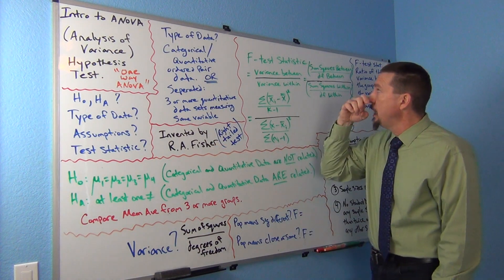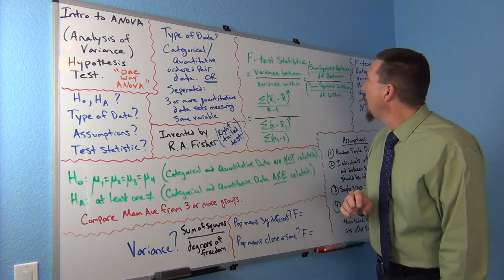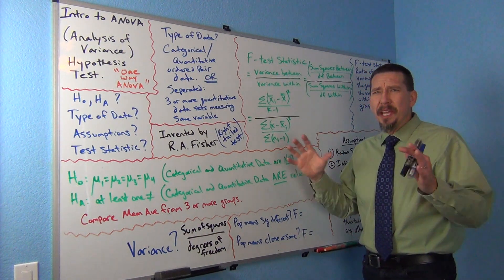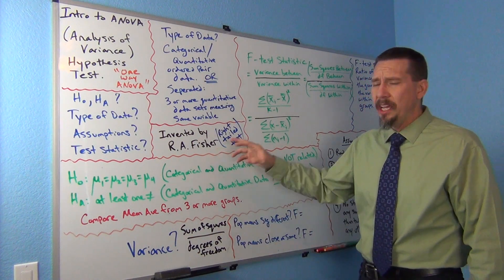R.A. Fisher came up with the idea of what we call the F-test statistic. Sometimes people refer to it as the law of total variation, but it is rather brilliant.